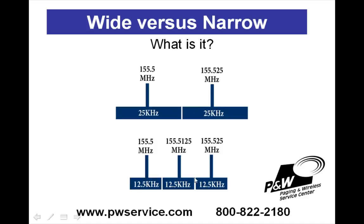This allows an extra channel in between existing channels. The problem is when your pager receives 25 kHz, that bandwidth goes across and picks up the adjacent channel which just came into existence next to yours. This extra channel in between your channel and the next one didn't exist a few years ago. So what the new narrowband pagers do is they only receive a transmission of 12.5 kHz instead of the old 25 kHz.